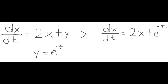Solving for dx/dt was a little more difficult, but still pretty doable. Since there was both an x and a y term there, all I had to do was substitute e to the power of negative t for y, and that left me with dx/dt equals 2x plus e to the power of negative t.